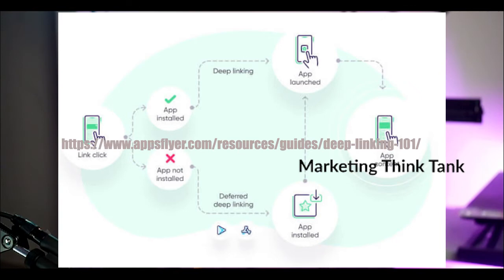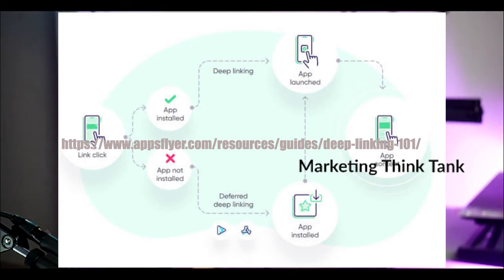There are three kinds of deep links. The first is a standard deep link — a basic deep link where users will go to the exact page if they have the app installed. If they don't have the app installed, they'll automatically be taken to a page where they can install it, or in some cases it throws an error message saying the page is invalid.